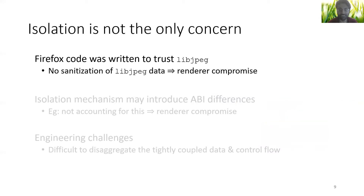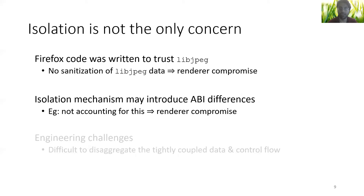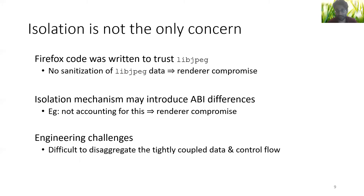Unfortunately, no — isolation is not the only concern. First, Firefox was written to trust libjpeg, which means Firefox code does not sanitize any data from libjpeg, and this can be used to compromise the renderer despite the isolation. Second, isolation mechanisms like WebAssembly introduce ABI differences, and if we don't account for these differences, the end result is at best a crash and more likely a compromise. Finally, the data structures and control flow in Firefox and libjpeg are tightly coupled, and decoupling this is error-prone and tedious.